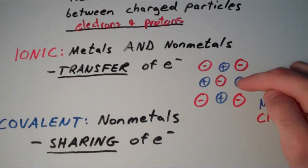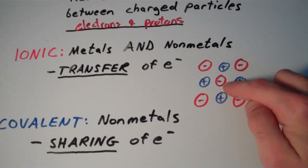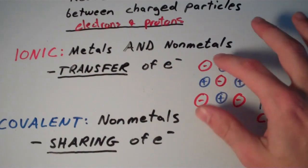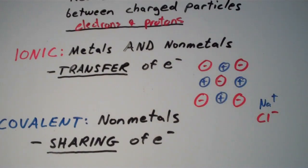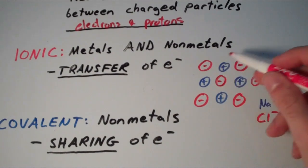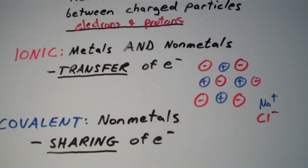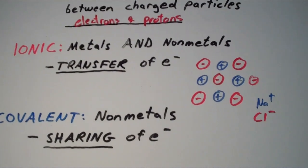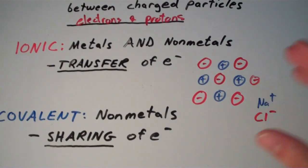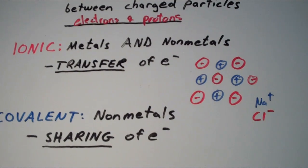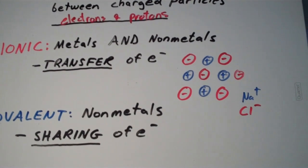So, notice how this chloride ion is surrounded by sodium ions. And then, if we were to continue drawing this out, we would see that each sodium ion is surrounded by chloride ions. And this regular pattern, this pattern goes on forever, this pattern goes on infinitely throughout the entire solid. So, this is what we call a lattice.